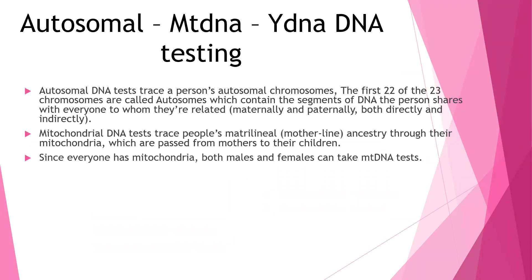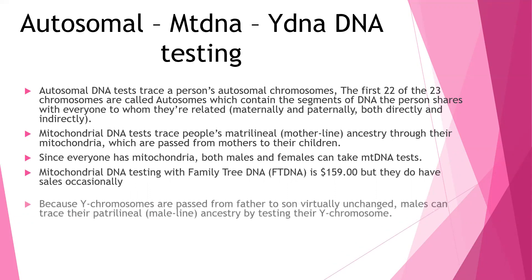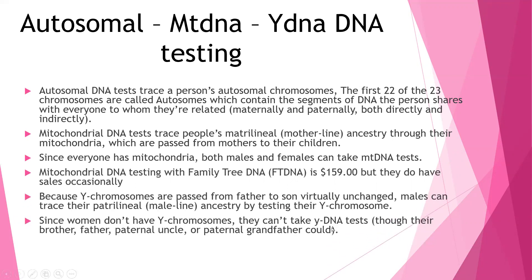For autosomal DNA tests, there are three major tests people can take. Autosomal DNA tests trace a person's autosomal chromosomes — the first 22 of the 23 chromosomes — which contain the segments of DNA the person shares with everyone they're related to, maternally and paternally, both directly and indirectly. Mitochondrial DNA tests trace people's matrilineal line — the mother's line of ancestry — through their mitochondria, which are passed from mothers to their children. Since everyone has mitochondria, both males and females can take mitochondrial DNA tests. Mitochondrial DNA testing with FamilyTreeDNA is $159, but they have sales occasionally.